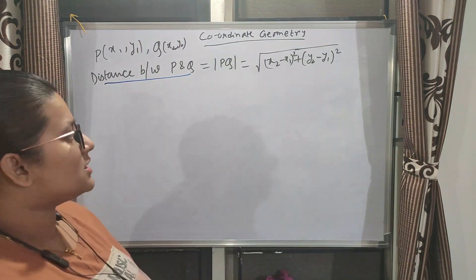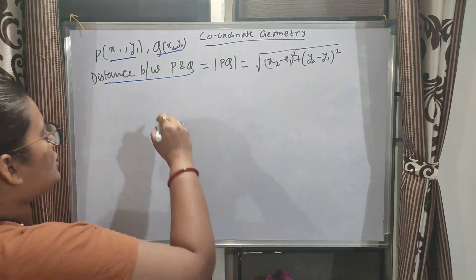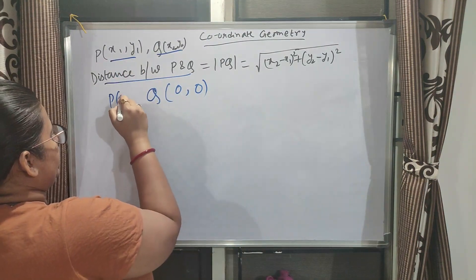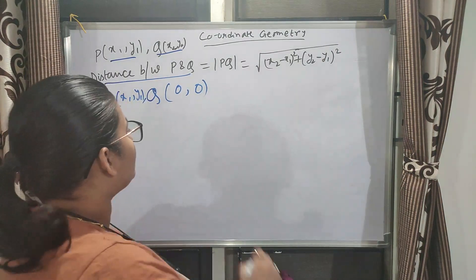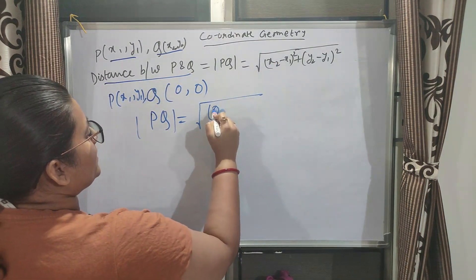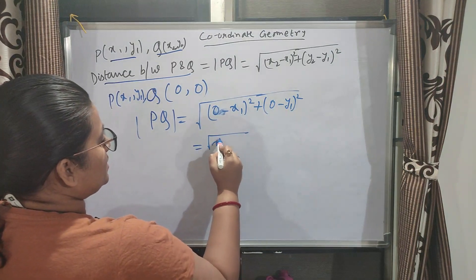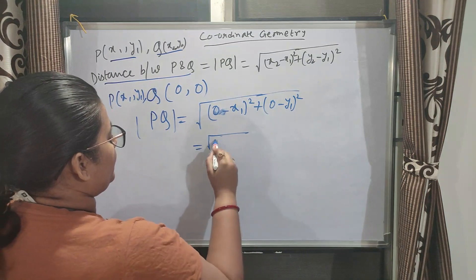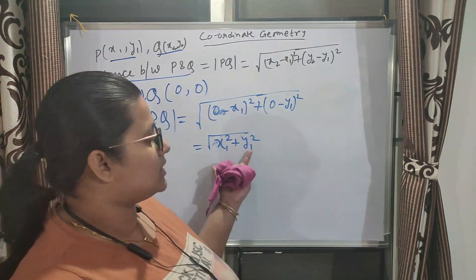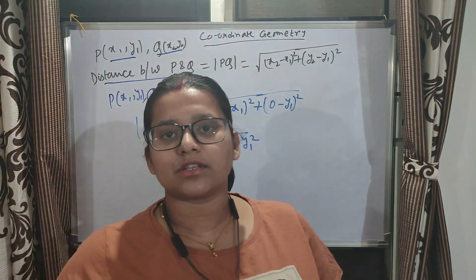Now there are a few cases. Suppose one point is the origin. Here both points are arbitrary, but suppose we take Q as the origin, so its coordinate will be (0, 0). The distance between P at (x₁, y₁) and Q will be the square root of (0 - x₁)² + (0 - y₁)², which equals the square root of x₁² + y₁². So when you need to find a point's distance from the origin, you just square the coordinates, sum them, and take the square root.